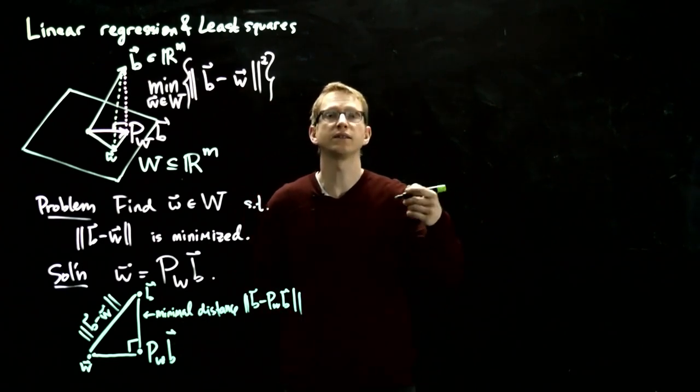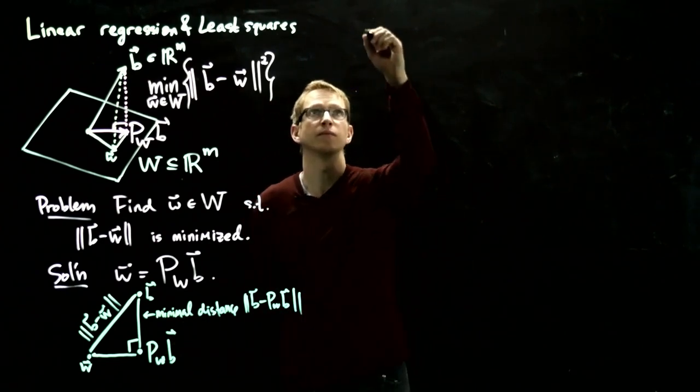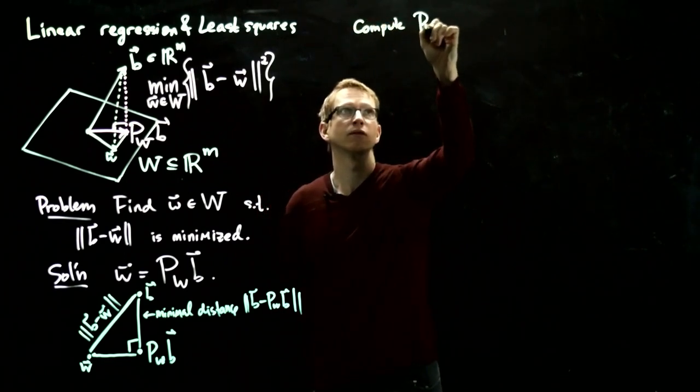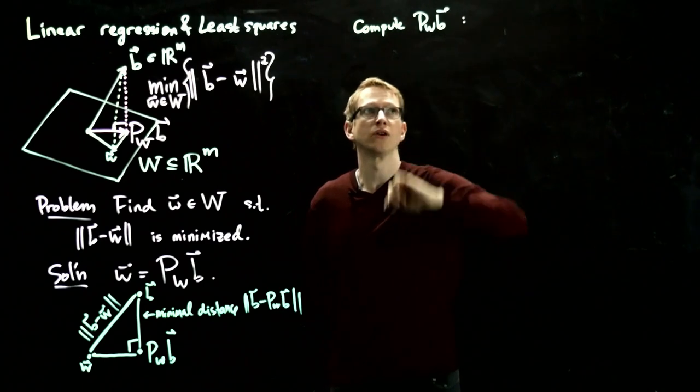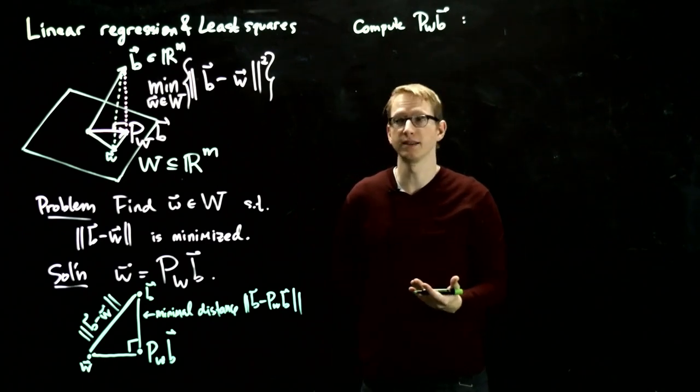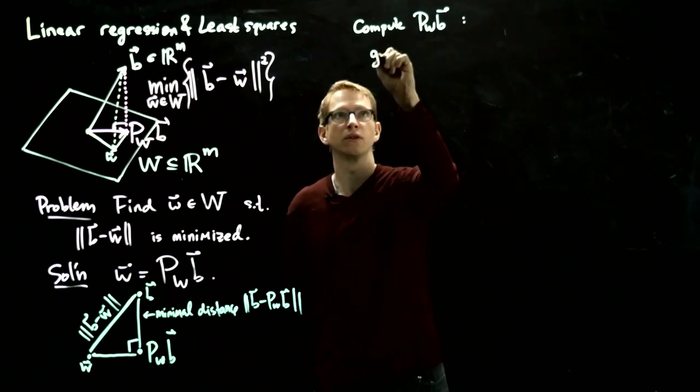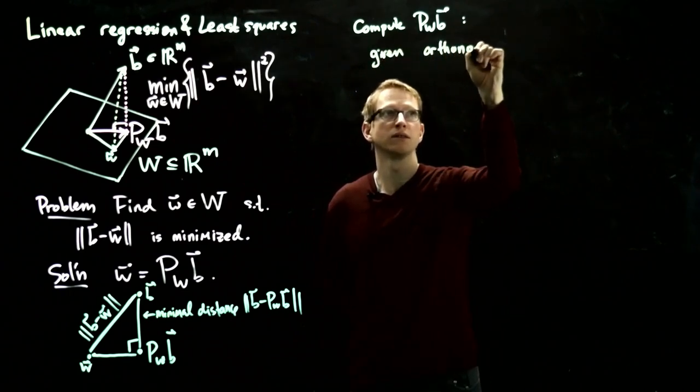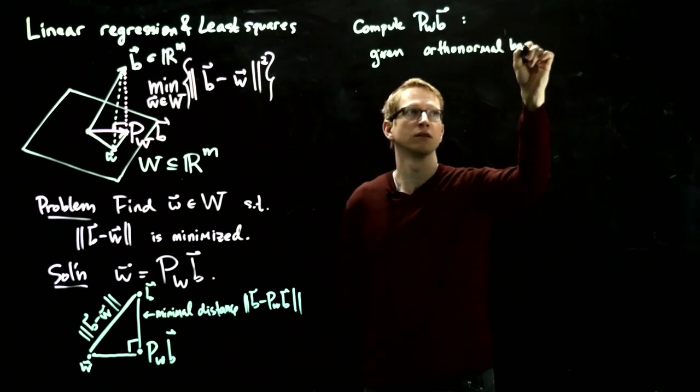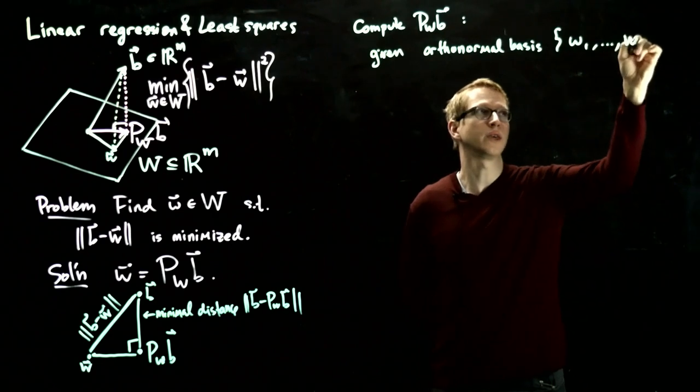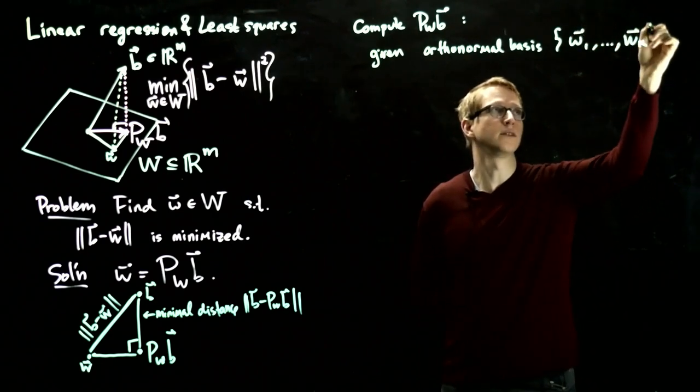So what are some ways to compute this projection? One way is to actually find an orthonormal basis of W. So given an orthonormal basis, let's call it w_1 up to w_k. Let's say k is the dimension of W.